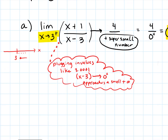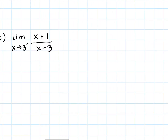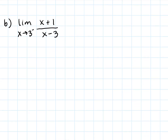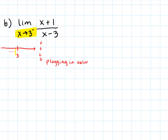What if we looked at it from the other direction? What if we did that same rational expression but took x approaching 3 from the left side? When we're coming from the left side, that little negative tells us we're approaching 3 from the left. I'm plugging in values like 2.99999. What then happens to that expression x minus 3 in the denominator? It's going to approach 0, but from the left — it's going to be negative, like negative 0.0001.